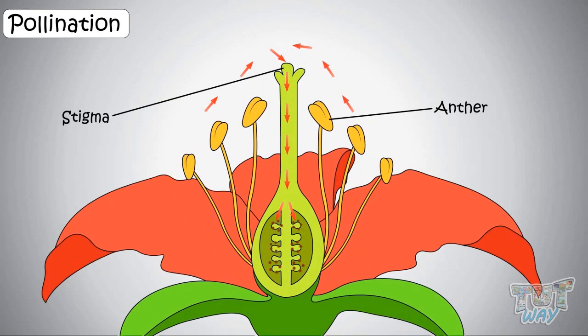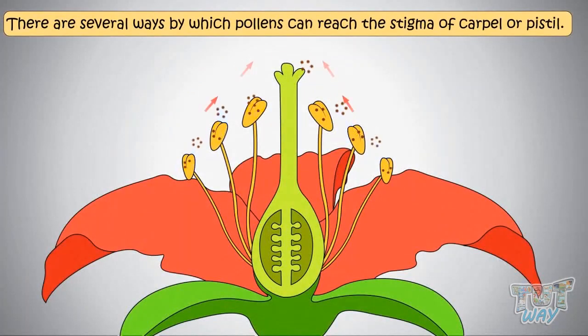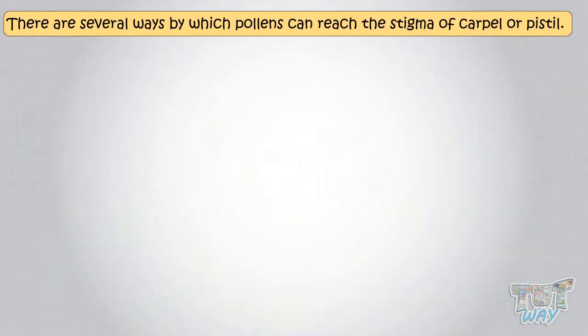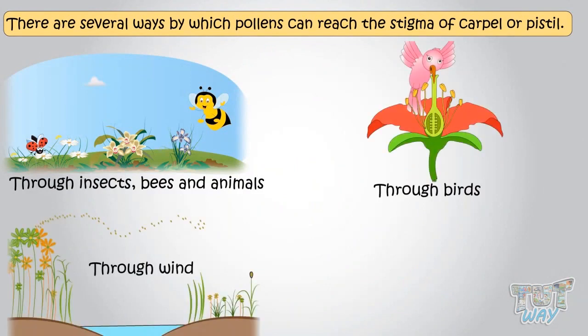Now let's see how pollination occurs or how pollens reach stigma. There are several ways by which pollens can reach stigma of carpal. It can be through insects, bees, animals, birds, wind or even water.